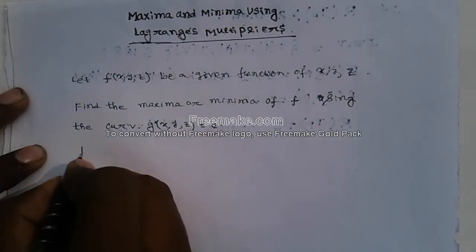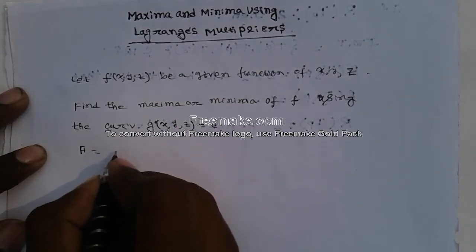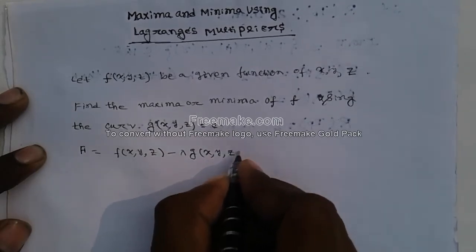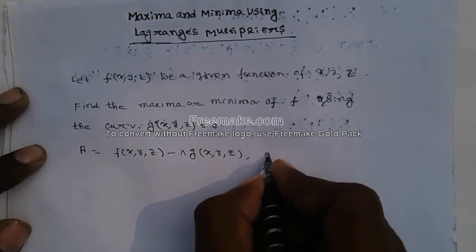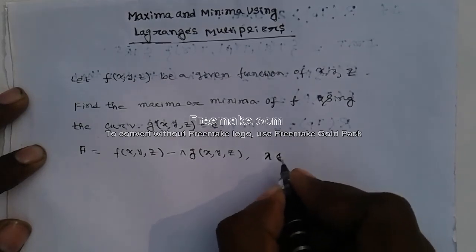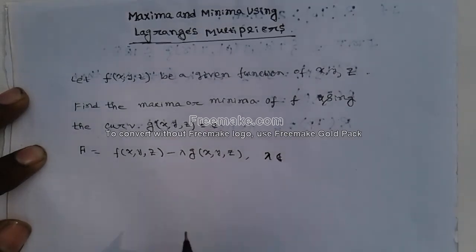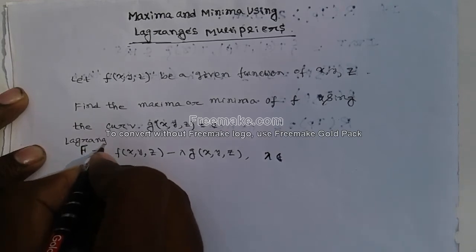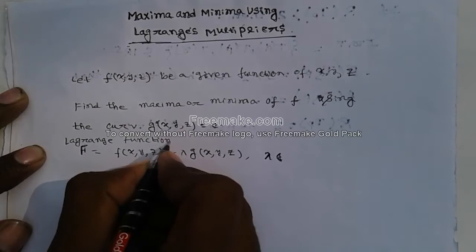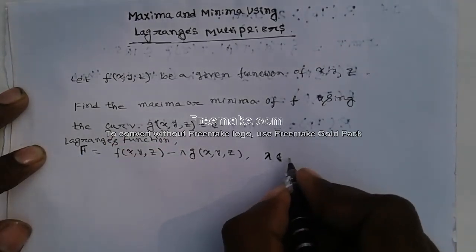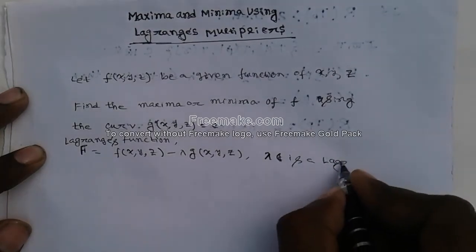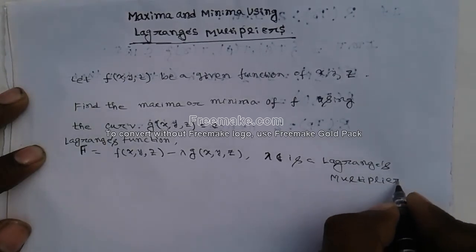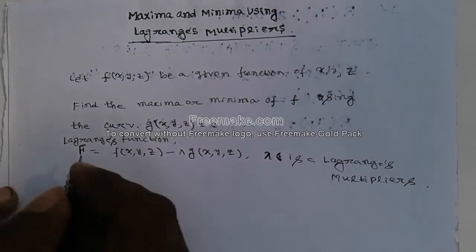First, we define a new function F equal to f(x, y, z) minus lambda times g(x, y, z), where lambda is a variable called the Lagrange multiplier. This function F is called the Lagrange function.